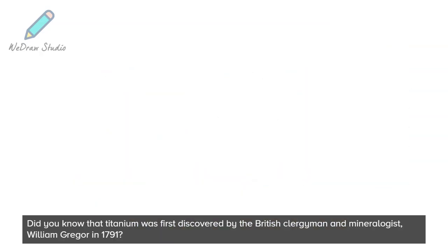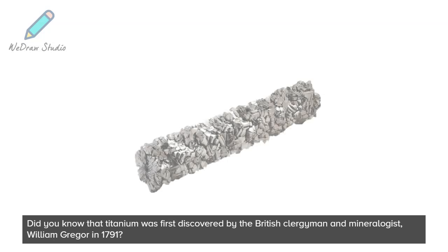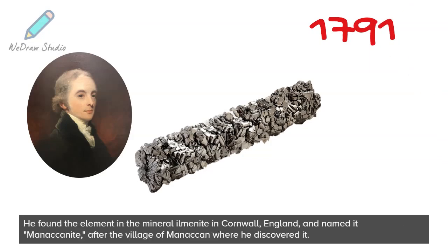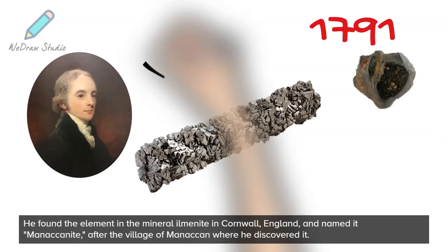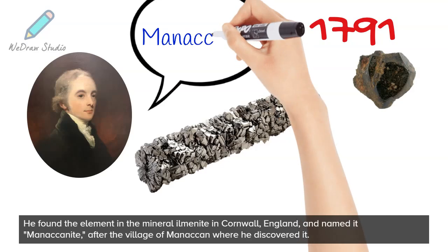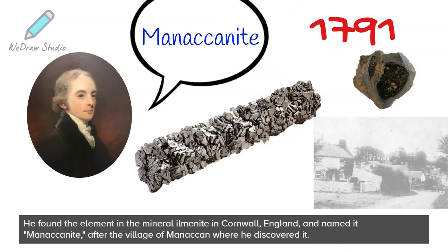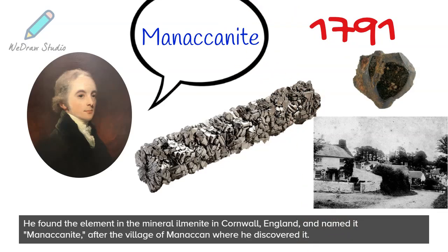Did you know that titanium was first discovered by the British clergyman and mineralogist William Gregor in 1791? He found the element in the mineral ilmenite in Cornwall, England, and named it manaccanite, after the village of Manaccan where he discovered it.